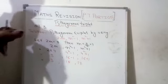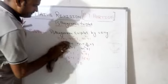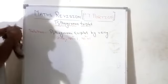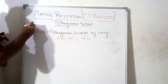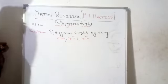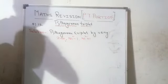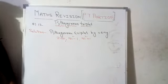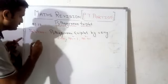Next question: find the Pythagorean triplet of 12. We use the same formula: 2m, m squared minus 1, and m squared plus 1.